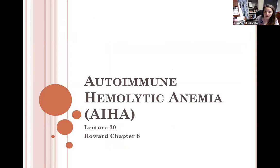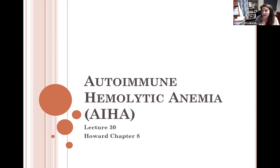Autoimmune hemolytic anemia occurs when the patient has an antibody or complement that attaches to its own cells. That will result in either intravascular hemolysis in the event of complement, or extravascular hemolysis in the event of an antibody attached to the red cells — the spleen then removes those antibody-coated cells, causing the basis of the patient's anemia.